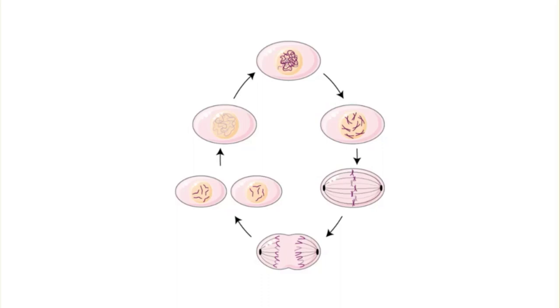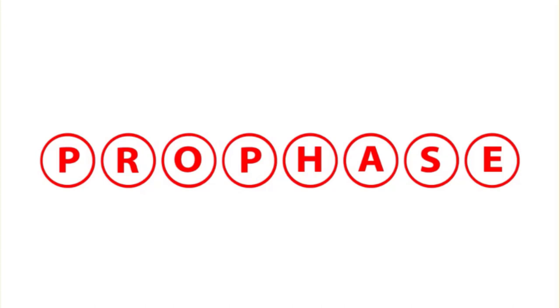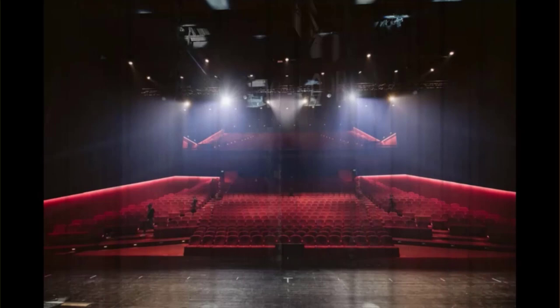Mitosis: chromatin condenses. This is in prophase and the nucleus starts to break down. Now microtubules stretch from centrioles to kinetochores, connected to them.